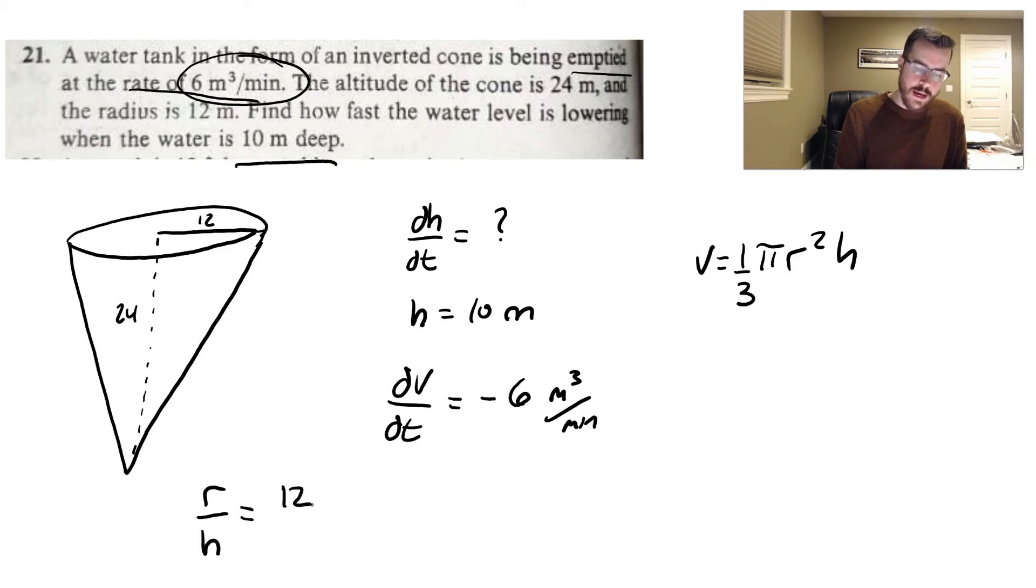And we're going to do that by setting up a ratio between our radius and our height. So when the radius is 12, we know that the height is 24. That means the radius to the height is really just a 1 to 2 ratio. 12 divided by 24 is 1 to 2.